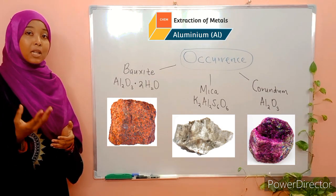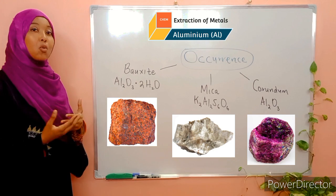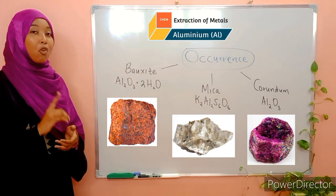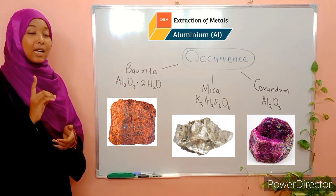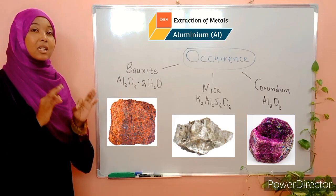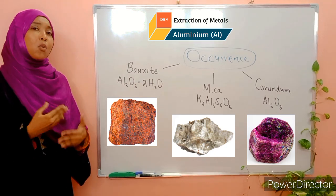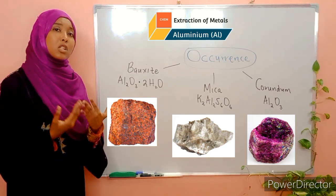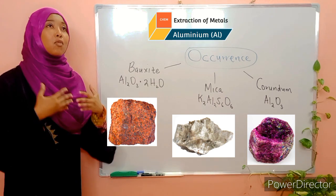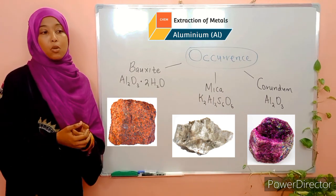Aluminium is extracted from bauxite through electrolysis. But before electrolysis can happen, the ore first needs to be concentrated. When we talk about concentration of the ore, it simply means removal of as many impurities as possible.